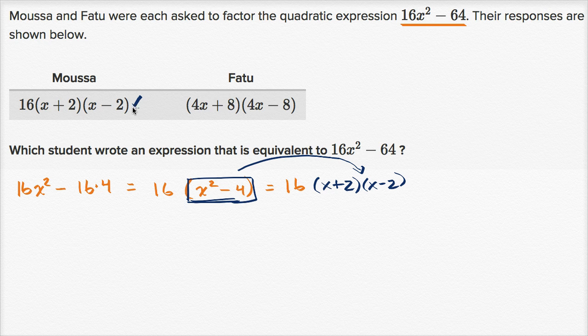Fatou didn't factor out a 16 from the get-go. It looks like he just immediately recognized that our original expression is itself a difference of squares, even if we don't factor out a 16. So let's rewrite it.